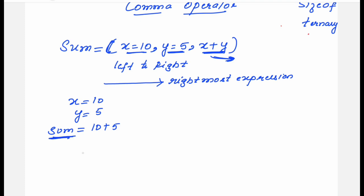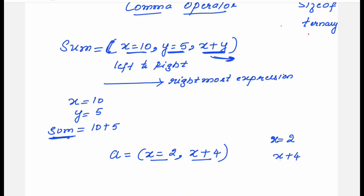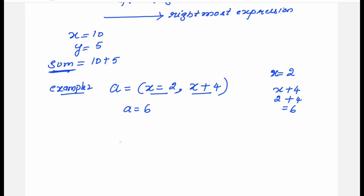Let me give one more simple example. Suppose I write: a = (x=2, x+4). Just two expressions are there. First, x=2 is evaluated — a value 2 is assigned to x. Then comes the next expression x+4, where x is 2, so 2 plus 4 equals 6. Now 6 is assigned to the variable a.